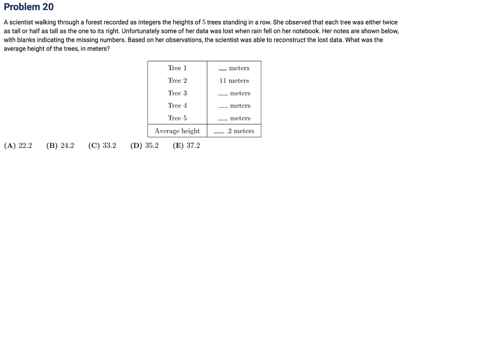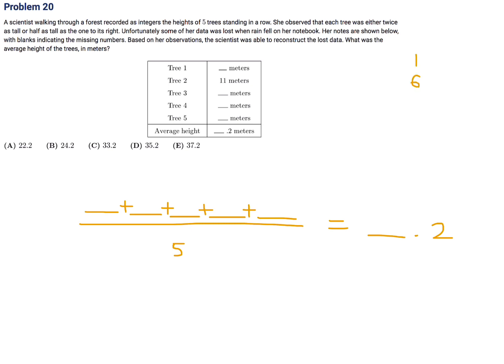A scientist recorded the integer heights of five trees in a row, where each tree was either twice as tall or half as tall as the one to its right. Some data was lost. The average height ends in .2, meaning the total sum divided by 5 gives something point two, so the sum must end in 1 or 6.